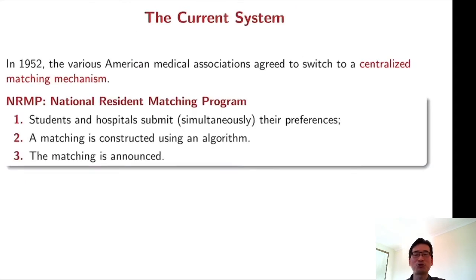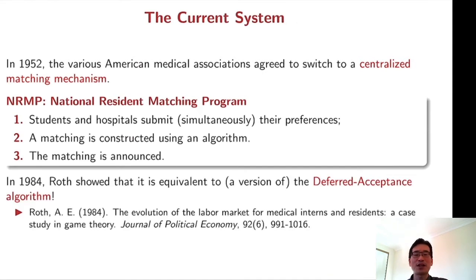In 1952, the various American medical associations agreed to switch to a centralized matching mechanism, which is called National Resident Matching Program. So students and hospitals submit their preferences. A matching is constructed by an algorithm, and then the matching is announced. It turns out the mechanism is equivalent to a version of the deferred acceptance algorithm.